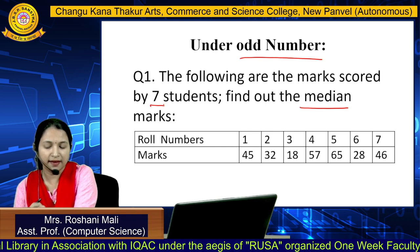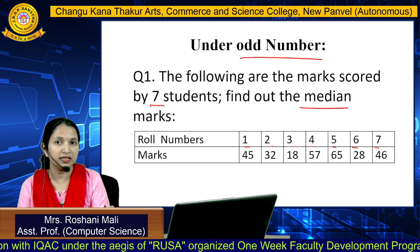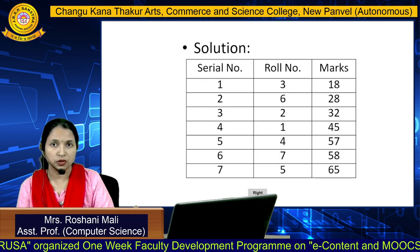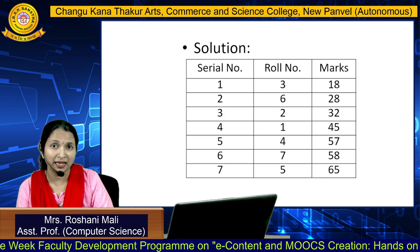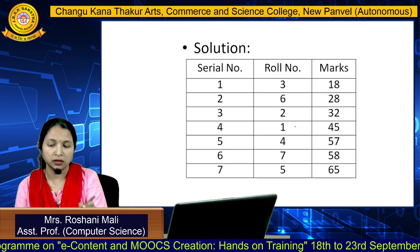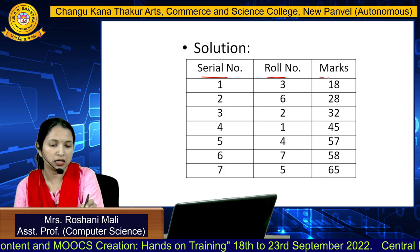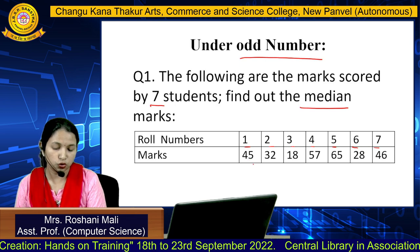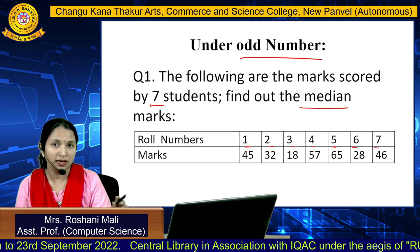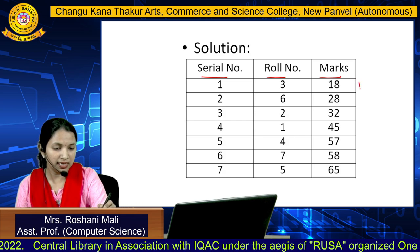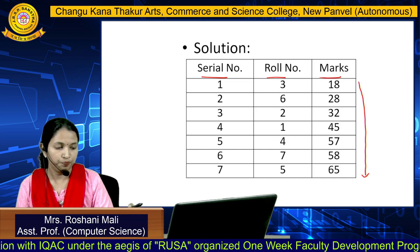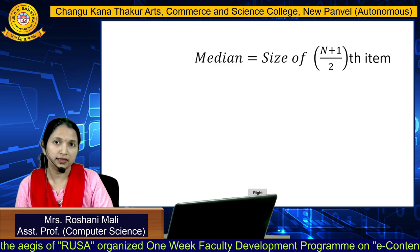We have 7 students, so roll numbers 1 through 7 with their respective marks. The first step is to arrange the data in ascending order. We draw a table with serial number, roll number, and marks. The original data is not arranged — it starts with 45, 32, 18, 57, and so on. After arranging in ascending order, the data becomes: 18, 28, 32, 45, 57, 58, 65.